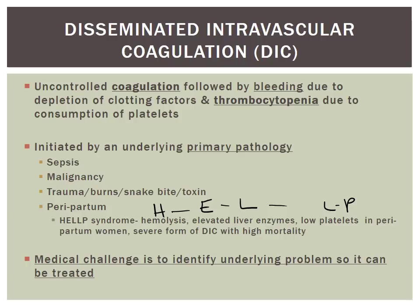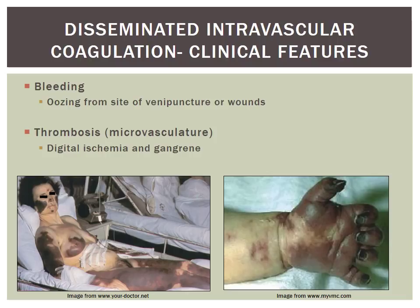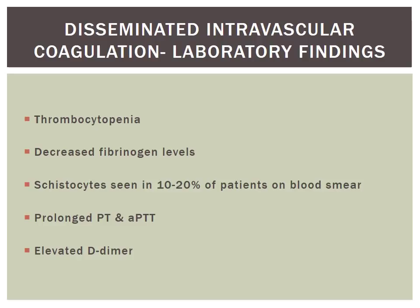DIC has clinical features of both bleeding and thrombosis. It is common to see oozing from venipuncture sites or wounds, while simultaneously seeing microvascular thrombosis causing distal ischemia that could lead to gangrene. Laboratory findings include thrombocytopenia due to platelet consumption, decreased fibrinogen levels due to clot formation, schistocytes in about 10 to 20% of patients due to hemolysis, prolonged PT and APTT from consumed coagulation factors, and elevated D-dimer due to clot formation.